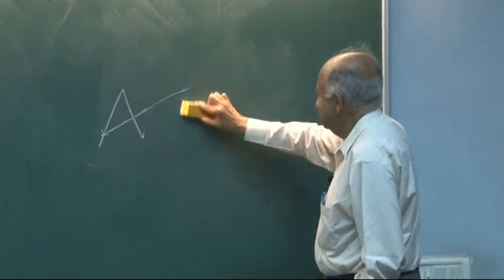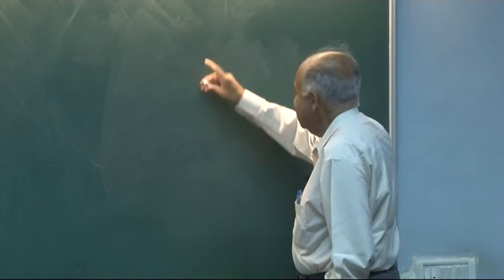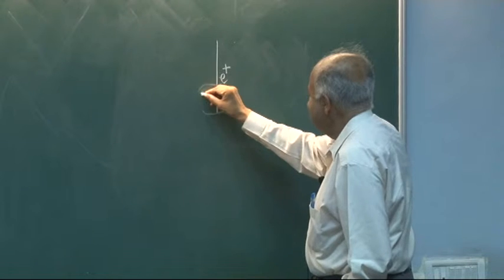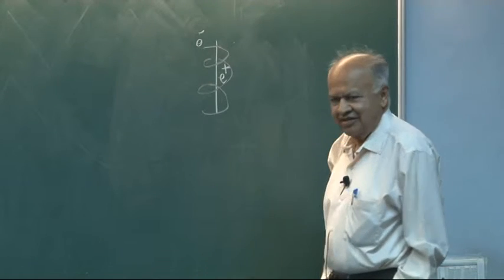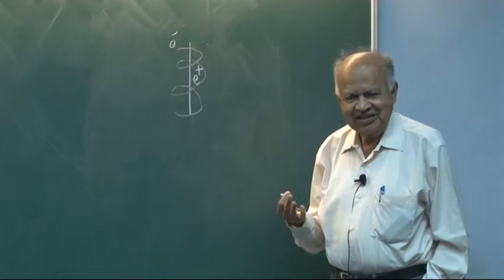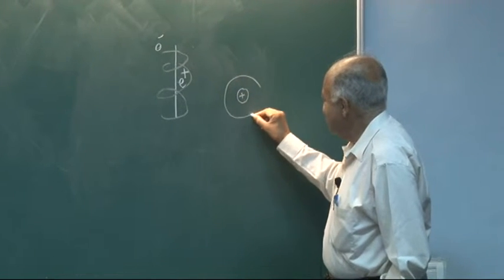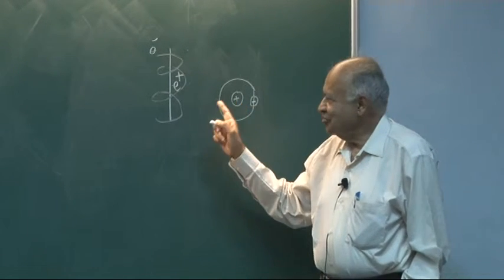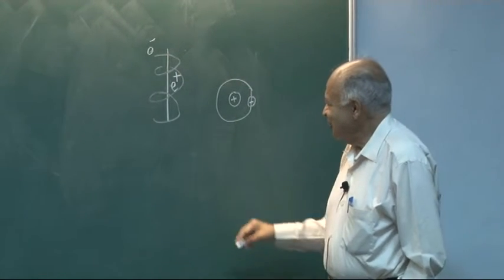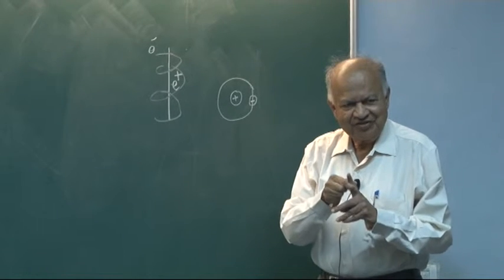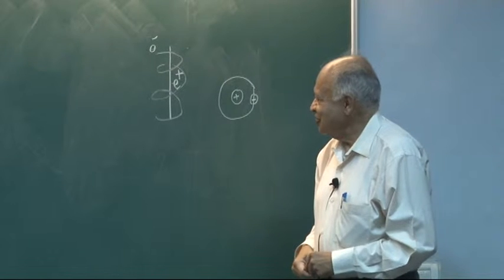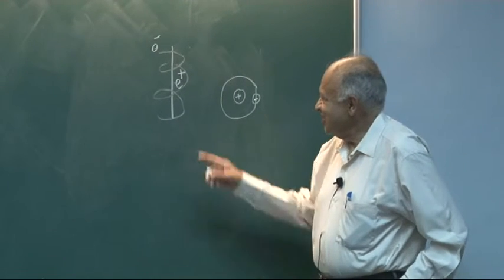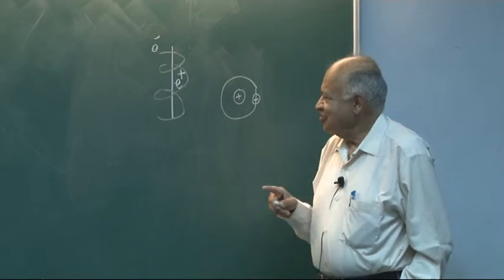So I can give you one example of this. Supposing you have a positron here and an electron which is going around. This is something like the hydrogen atom. In the hydrogen atom, what you have is a proton and an electron going around it. So instead of proton, I am replacing it by positron. So this thing that I have tried to draw here is what is called a positronium, that is a positron and an electron going around it. Now you could ask this question: here are two particles interacting, are they separate particles or are they the same particle?